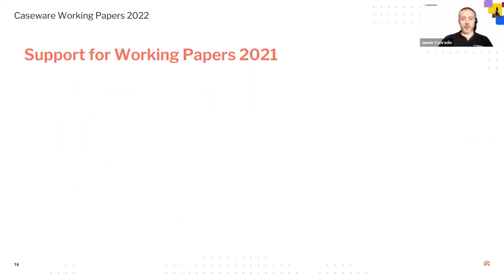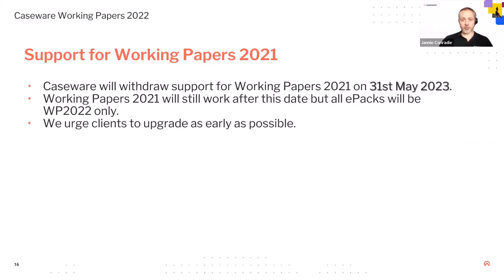A quick reminder about our support for Working Papers 2021: we will withdraw support for Working Papers 21 on the 31st of May this year. Your Working Papers 21 will still work after this date, but all ePACs from June onwards will only be in Working Papers 2022. We do urge you to upgrade as soon as possible. We will activate that warning message again in Working Papers a month before if you haven't upgraded. If you've never seen that warning message — well done, that means you've upgraded in time.